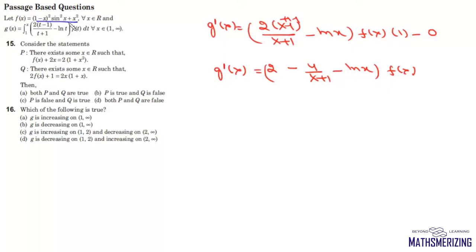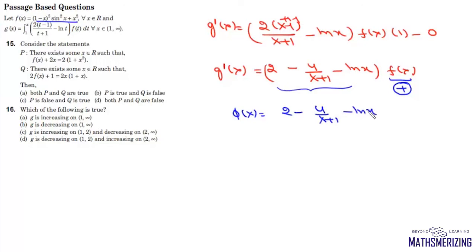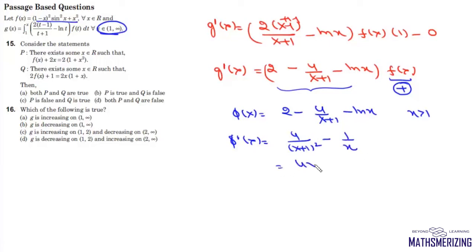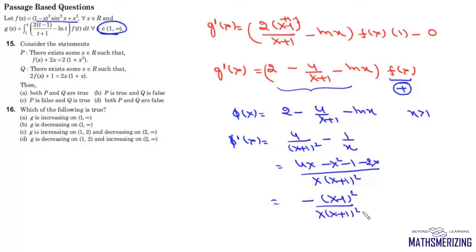Since f(x) is a sum of squares, f(x) is always greater than or equal to 0. Now we examine the expression φ(x) = 2 minus 4 upon (x plus 1) minus log x, for x greater than 1. Computing φ'(x): it equals 4 upon (x plus 1) squared minus 1 over x, which simplifies to [4x minus x squared minus 1 minus 2x] divided by x(x plus 1) squared, giving minus(x minus 1) squared divided by x(x plus 1) squared.